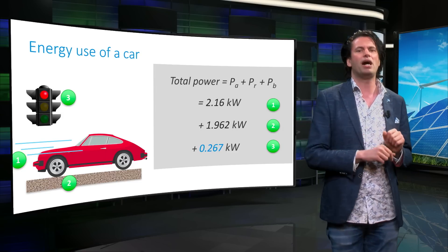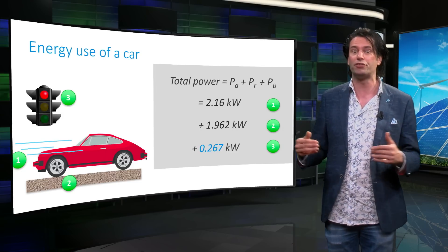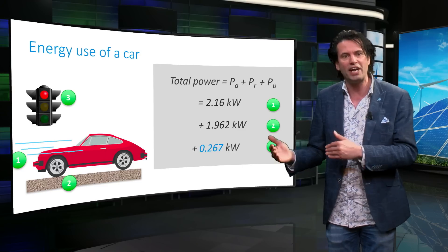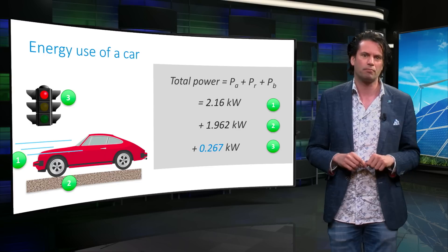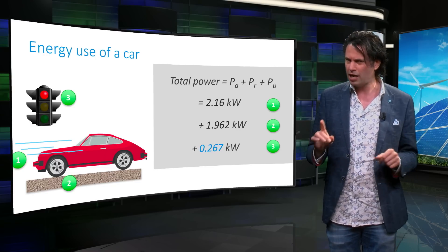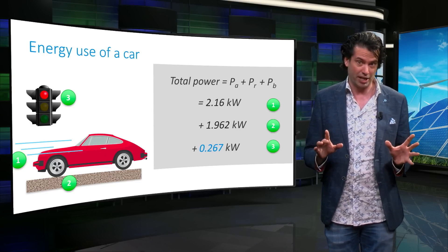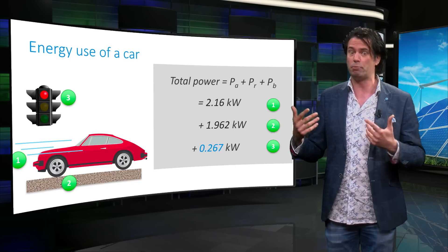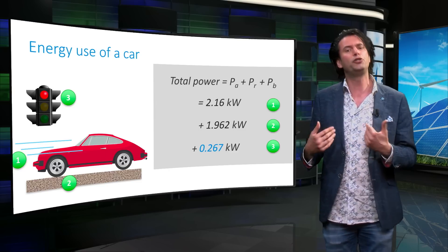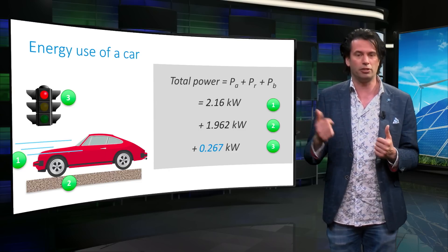This is why you get a higher mileage out of your car when you drive on the highway, compared to when you are driving in the city where you have to brake frequently. Modern cars these days have regenerative braking, where a large portion of the kinetic energy that is absorbed by the brakes is recovered, reducing the braking resistance considerably.